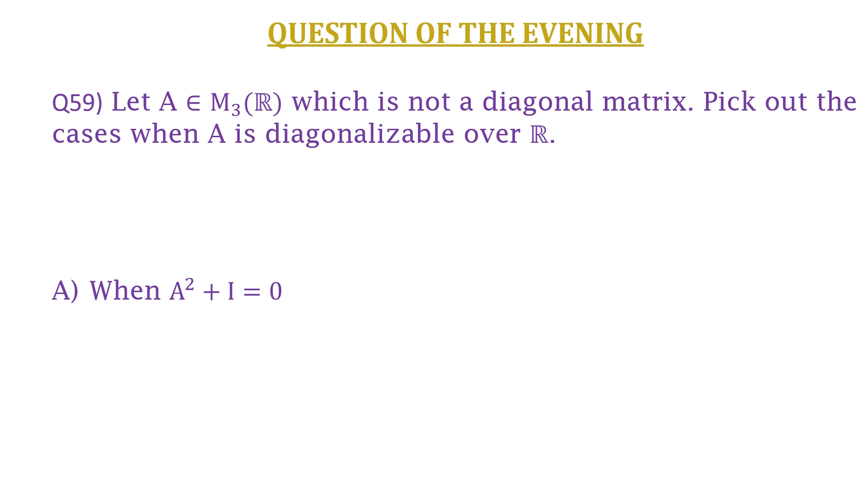The options are: A) when A² + I = 0, B) when (A - 3I)² = 0, C) when A² = A, and D) none of them. You can pause the video here and try by yourselves.